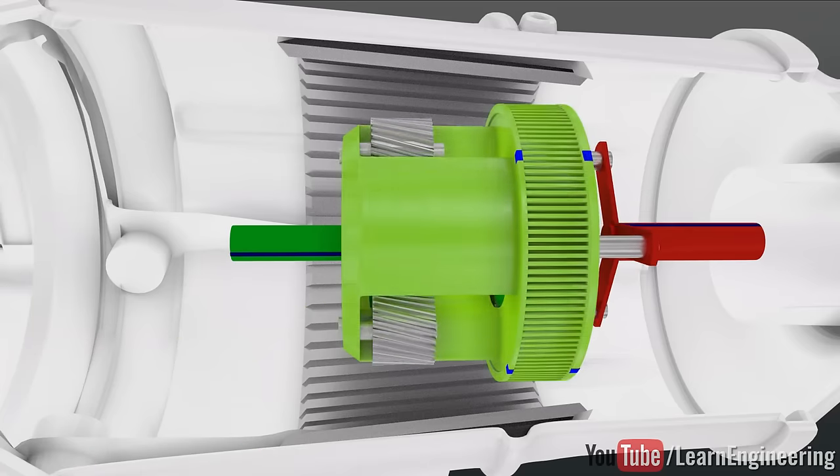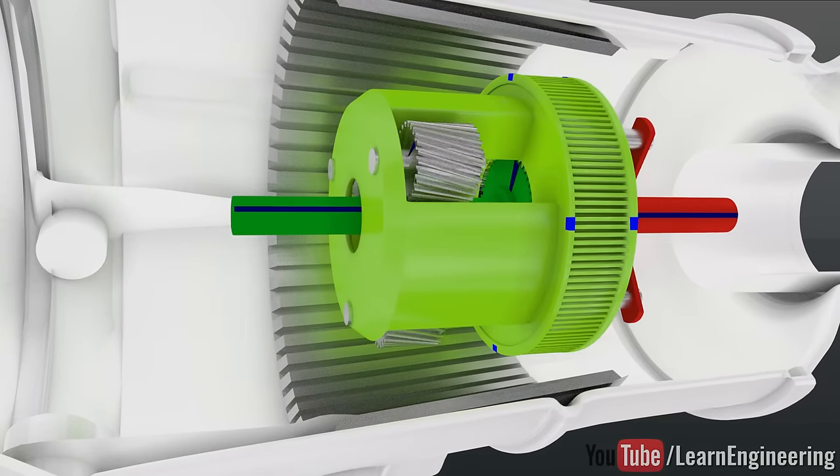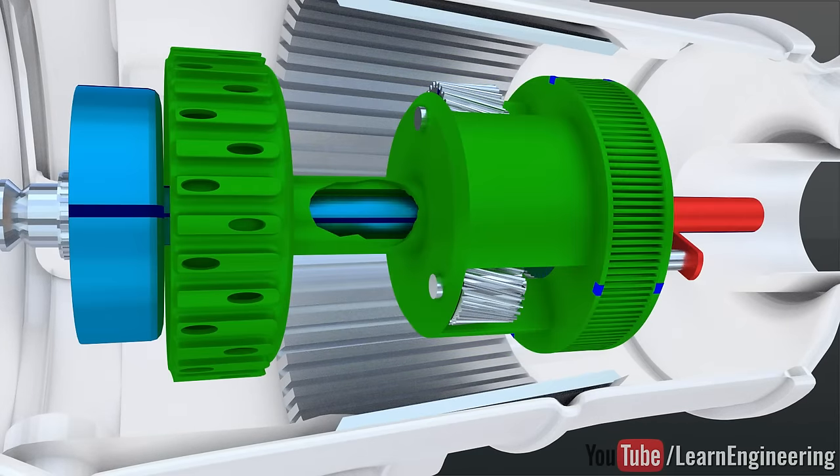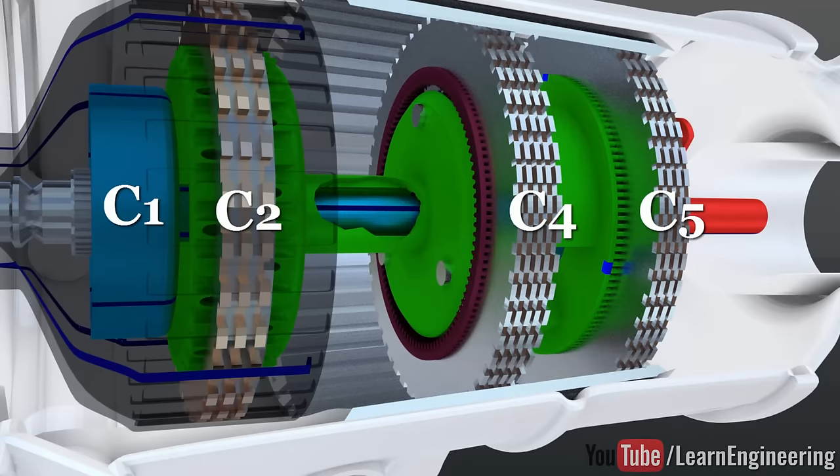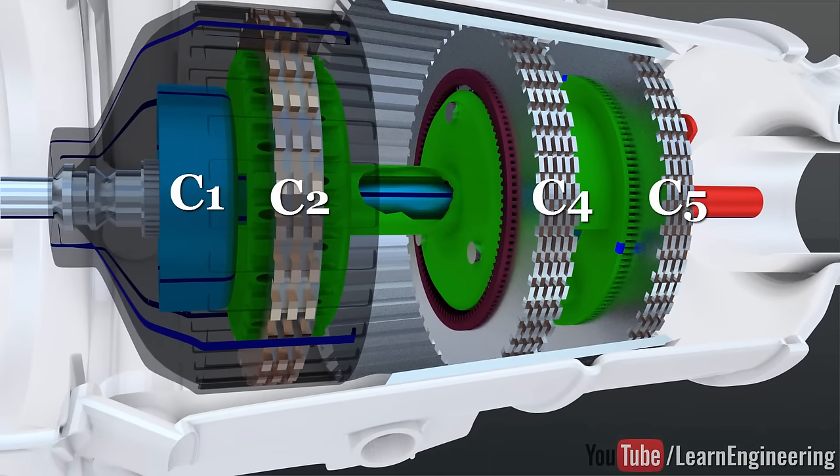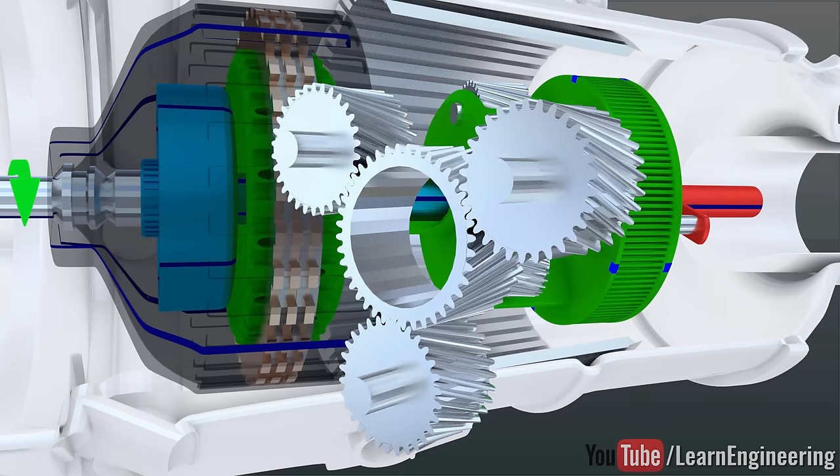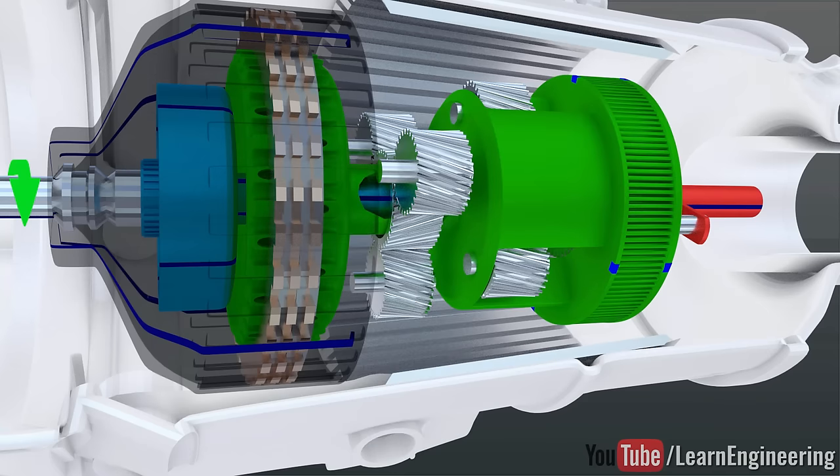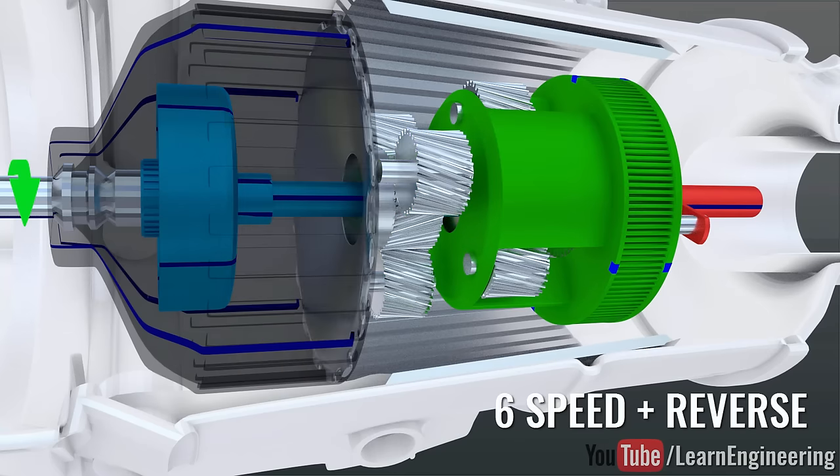Four different output speeds are possible with two planetary set arrangement. To learn the details of it, check out our detailed video on automatic transmission. By using three planetary gear sets in series, we will be able to achieve six different speeds and a reverse.